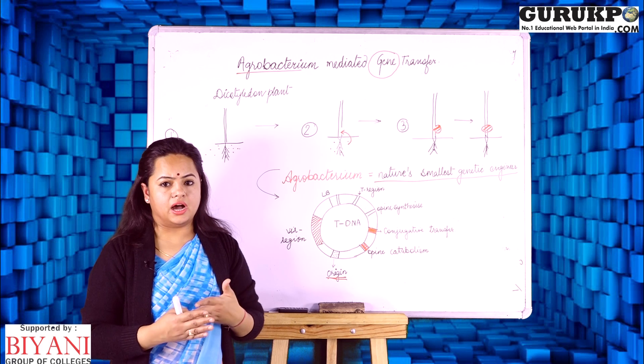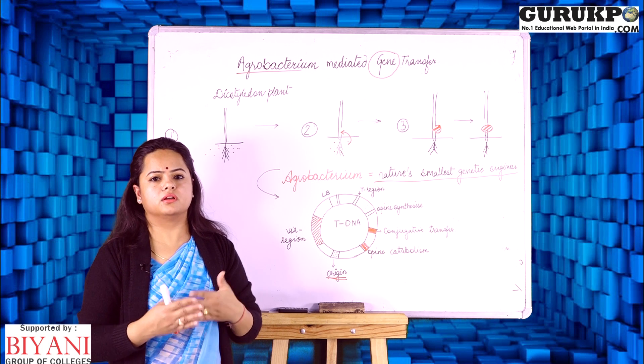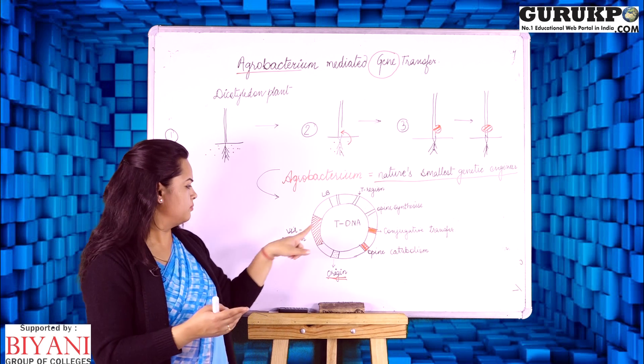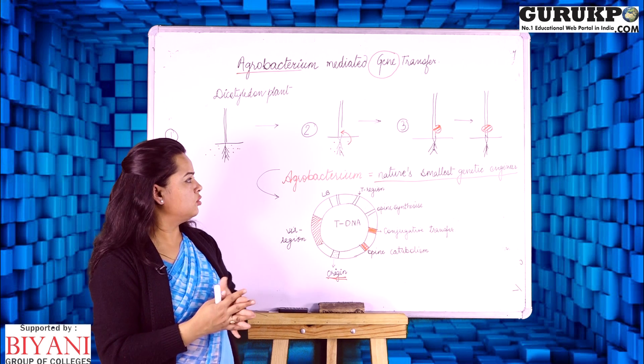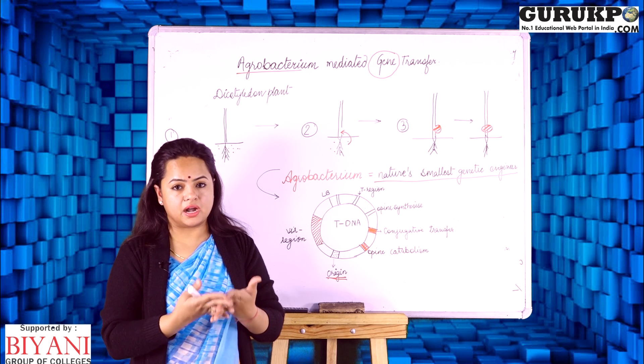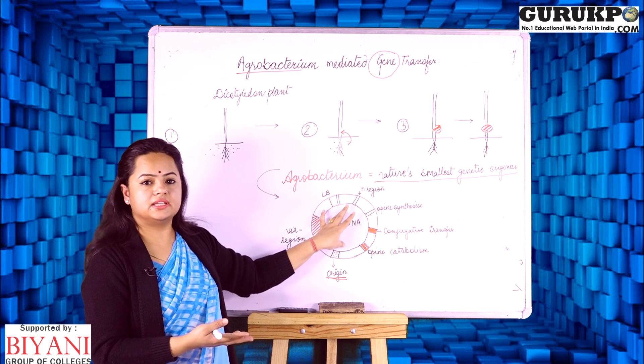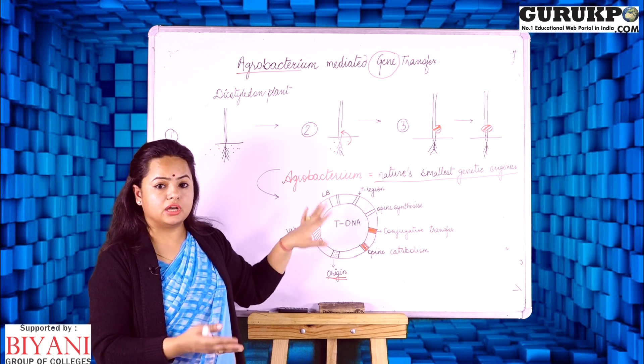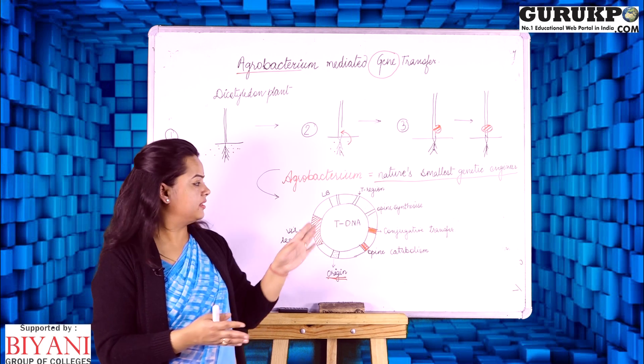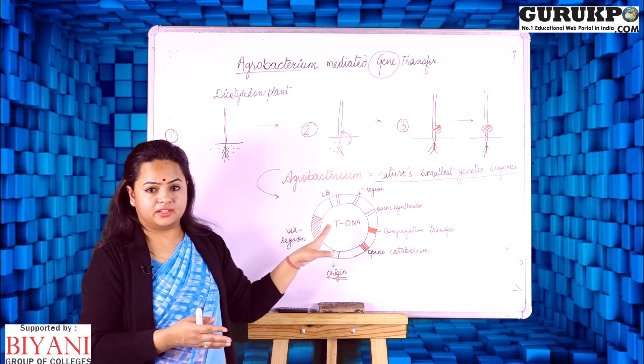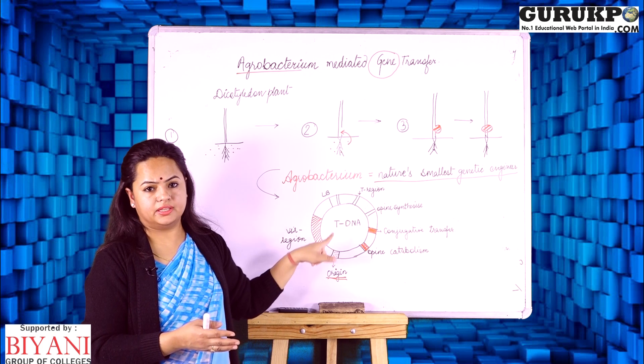So in our technology what we do, we just remove this region. We will not need to produce any galls on a plant body. We just remove this region and now this T-DNA can act without any disease symptom and the gene of interest could be inserted in the vectors which are derived from this type of DNA.